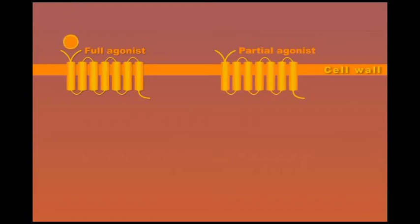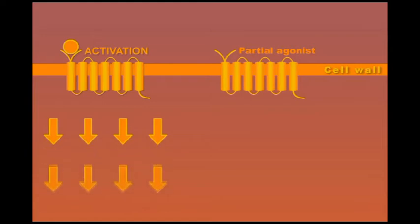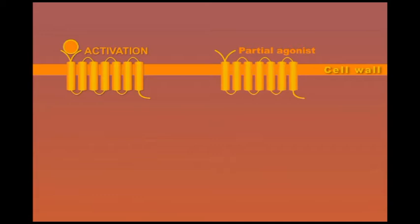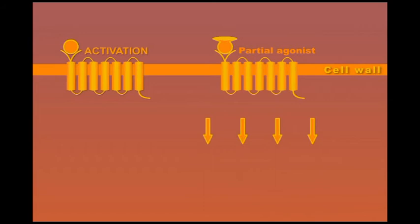When a full agonist binds to its receptor, it induces a cascade of biological responses. However, when a partial agonist binds to the same receptor, it produces much weaker biological effects. These effects can range from 1% to 99% of those produced by a full agonist.